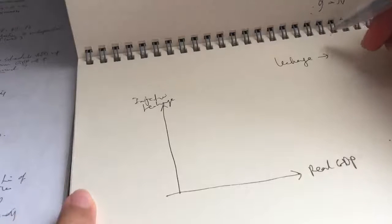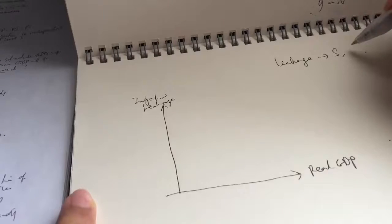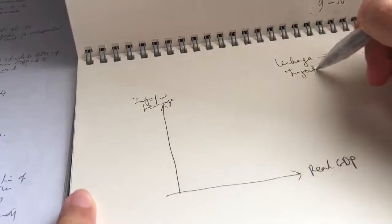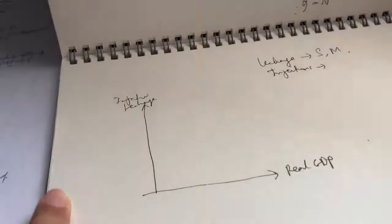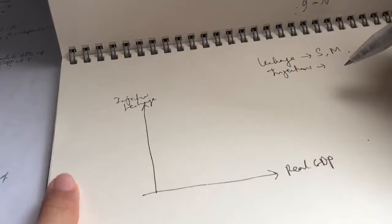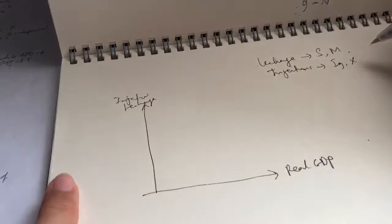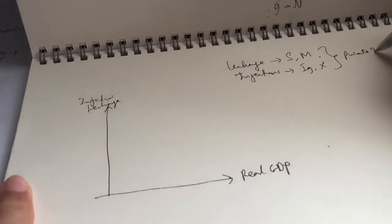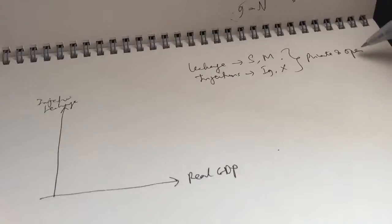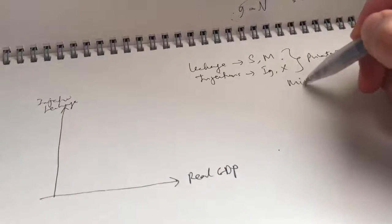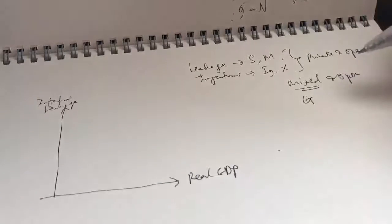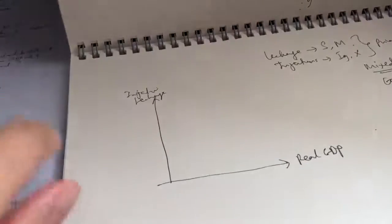Leakage is basically when spending goes out from the circular flow — in this case our leakage is savings and imports. Injections are when spending flows into the circular flow; examples include gross investment and exports. This was the situation when our economy was private and open. Now, since our economy is mixed and open, we include G — government spending — which is actually an injection.